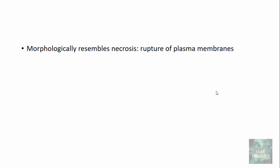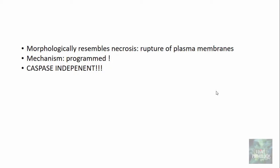What is necroptosis? The name itself says it is a combination of necrosis and apoptosis. Morphologically it resembles necrosis — there is evidence of rupture of the plasma membrane — whereas by mechanism it is programmed, resembling apoptosis. That is why it is called necroptosis. Importantly, there is no role of caspases here, so we call this a caspase-independent type of cell death.